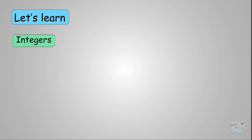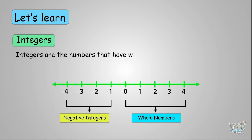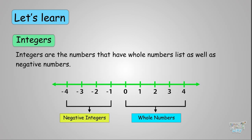Next are integers. We will be learning about integers in our next section, but they are the numbers that have whole numbers as well as negative numbers. For now, we will be learning about whole numbers and a lot of operations for whole numbers.